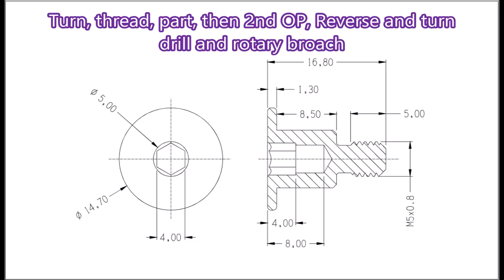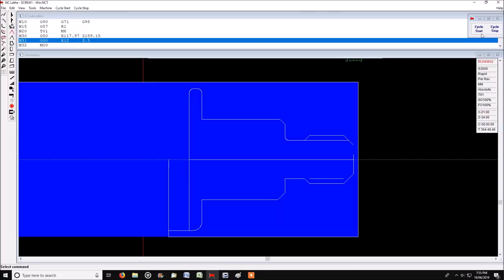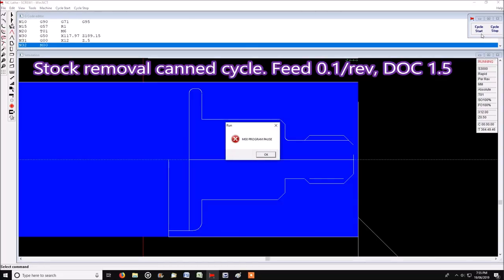Here you can see the part. First, turn, thread, and part. Then a second operation will turn it, drill it, and rotary broach it. This is a simulation of the way I was going to do it in the first place.